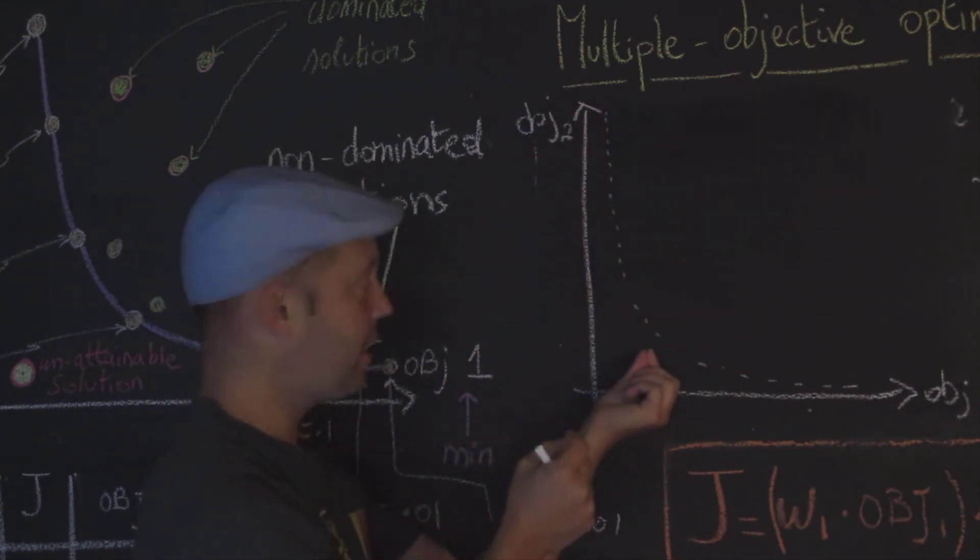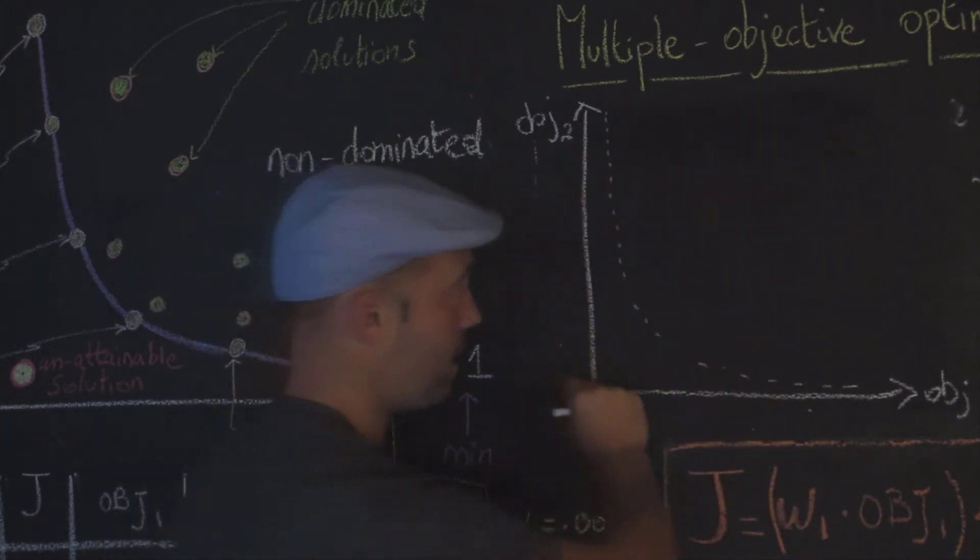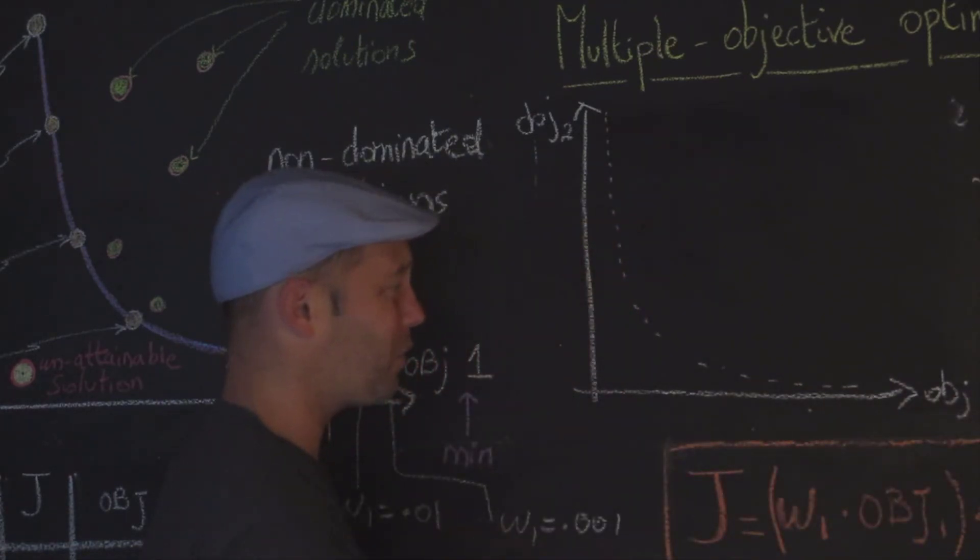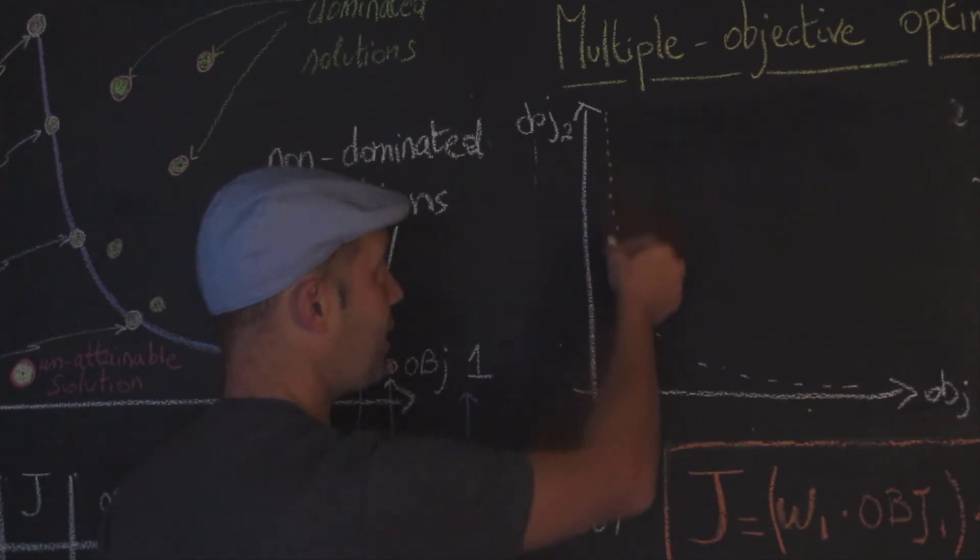In the case where objective one is very bad, there are a lot of schools that are open. That is going to drive down objective two, which is travel from the students. As I mentioned, it's very hard sometimes to get solutions on the Pareto front - it may take a long time.